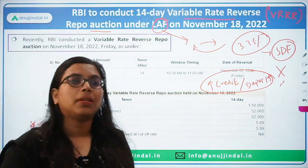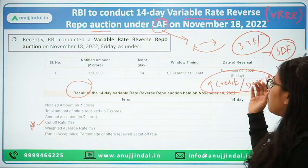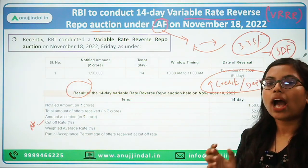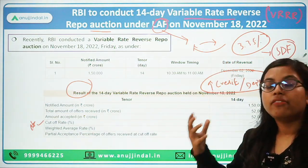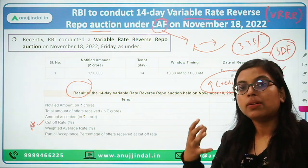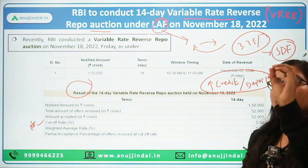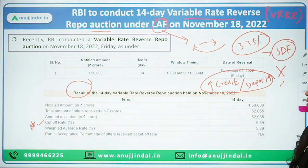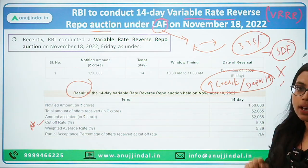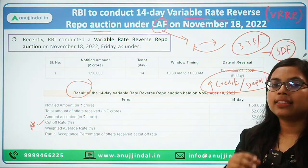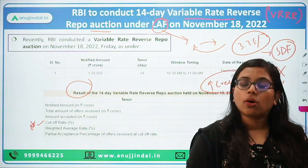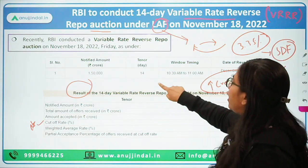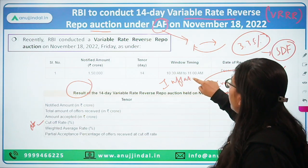RBI is conducting a 14-day variable reverse repo auction, where banks would have to park their money with RBI for 14 long days. The main or major intention behind this action by RBI and the Monetary Policy Committee is nothing but to contain inflation. Since inflation in our economy has been increasing — however, recent data for the month of October shows a reduction from 7.4% to around 6.9% — RBI wants to reduce it further to bring it within the target range.